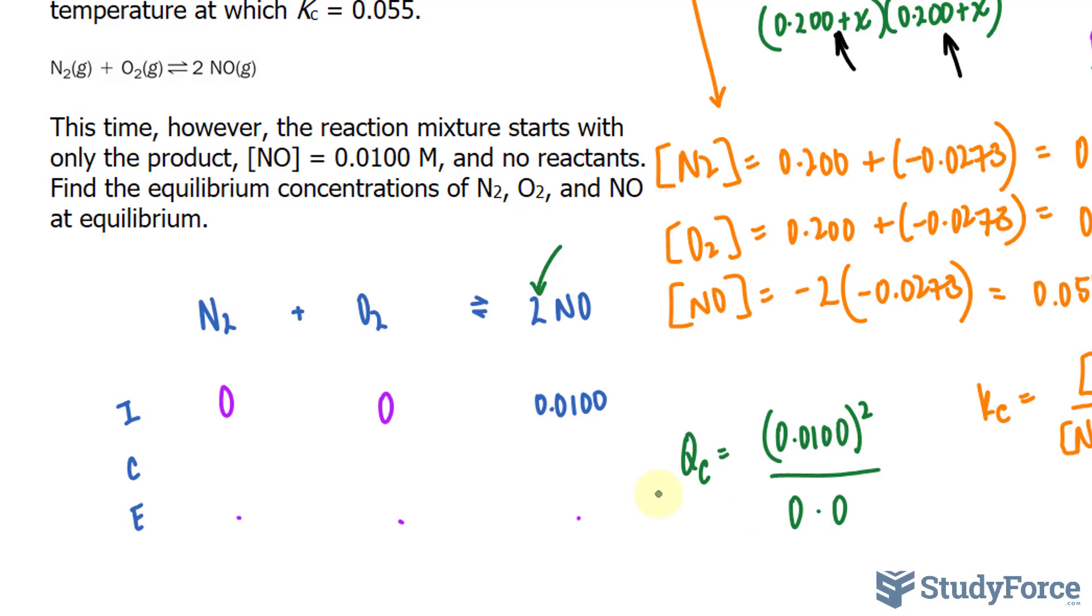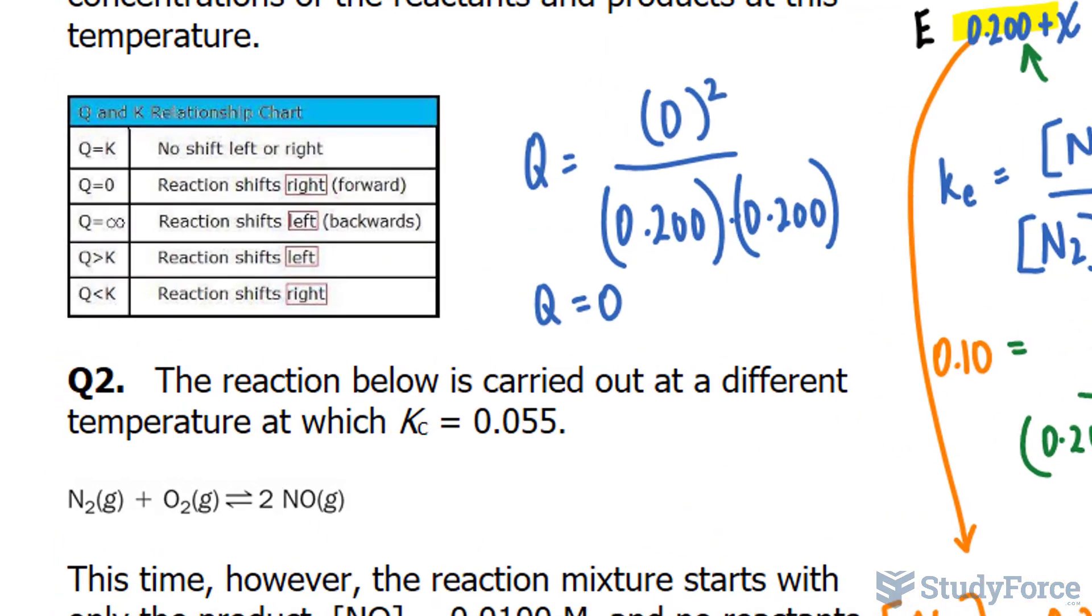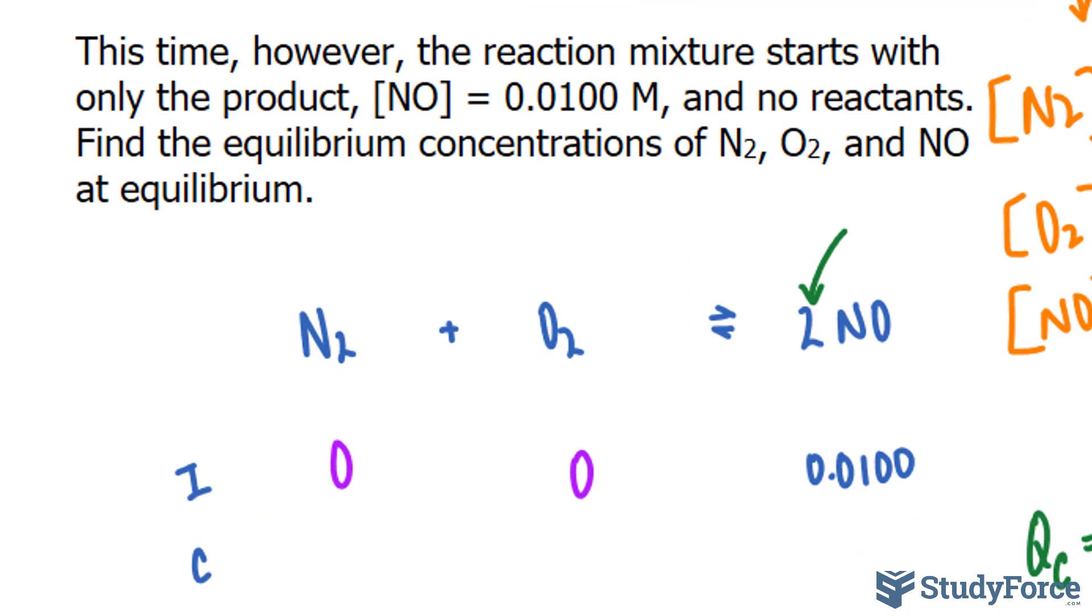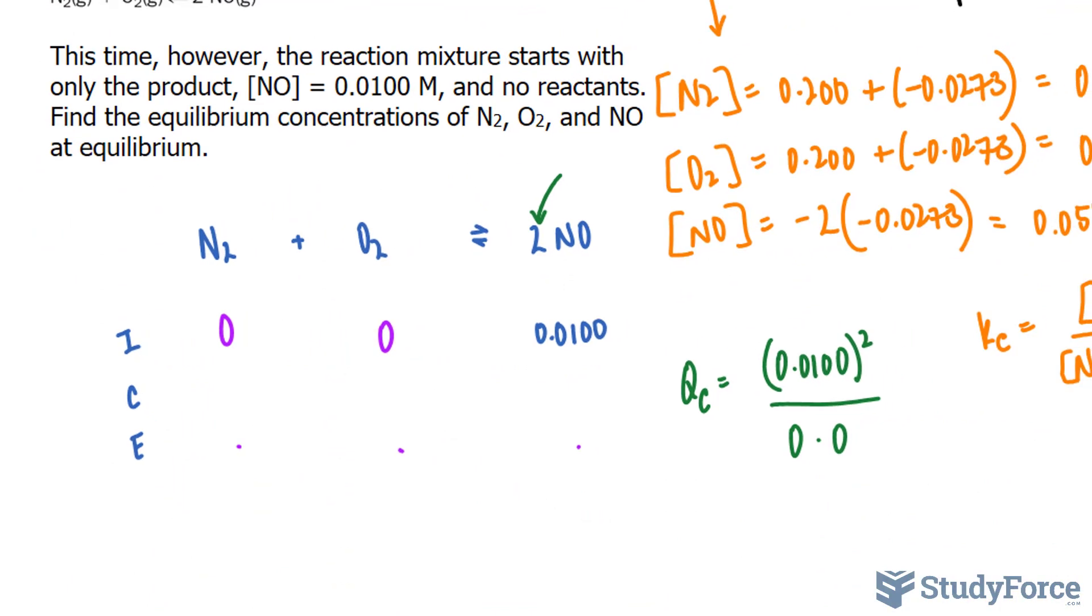Now when you have a product of 0 in the denominator, we can't generate a Qc, and in that case, according to this table, the reaction shifts to the left. We're looking at this one. So we know that the reaction, the overall reaction, is going to be moving in this direction.